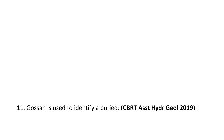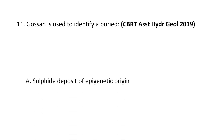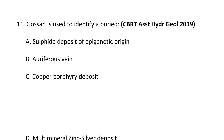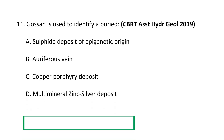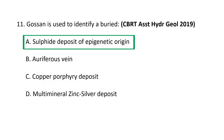Next question: gossan is used to identify a buried — A) Sulfide deposit of epigenetic horizon, B) Auriferous vein, C) Copper porphyry deposit, and D) Multi-mineral zinc-silver deposit. Gossan is used to identify a buried sulfide deposit of epigenetic horizon. Gossan is a rust-colored oxide and hydroxide mineral of iron and manganese that caps an ore deposit. Gossans form by the oxidation of sulfide minerals in an ore deposit, and may be used as clues to subsurface ore deposits, especially if distinctive boxworks are present. A is the correct option.